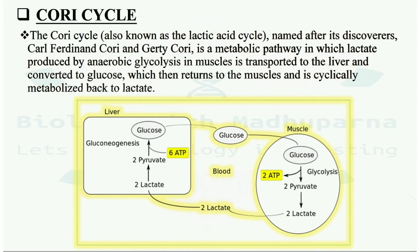The Cori cycle happens between muscle and liver via the bloodstream. In muscle, glucose is first converted into two pyruvate through glycolysis, generating two ATP. Pyruvate is then converted into two lactate. These two lactate molecules travel via the bloodstream to the liver, where they are converted back to two pyruvate, and then back to glucose through gluconeogenesis, consuming six ATP.